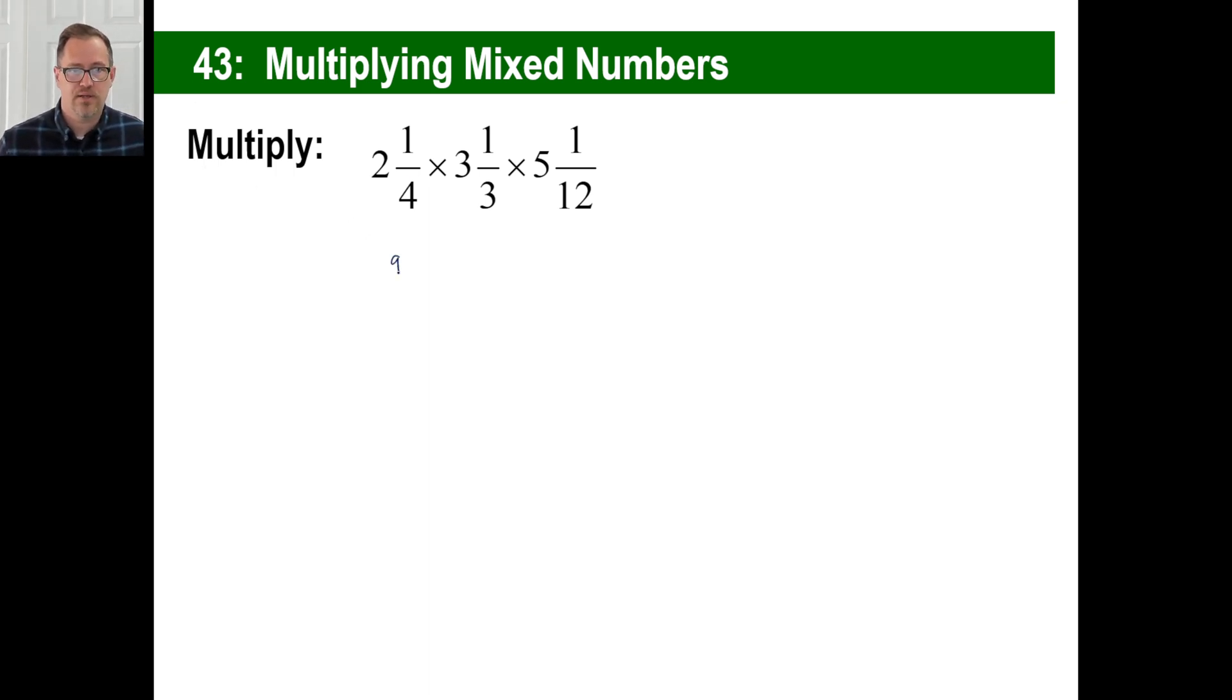All right, 2 and a fourth, we'll go. That is 9/4 times 3 and a third, 10/3, times 5 and a 1/12. 5 times 12 is 60 plus 1. There you go. I do not want to multiply all those across and then do that. So, forget it.